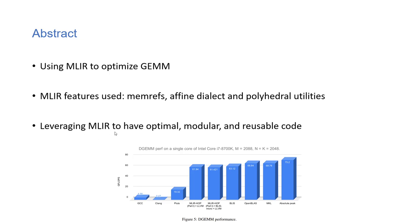The paper leverages MLIR to produce optimal, modular, and reusable code. Looking at the numbers, the MLIR high-level operator is very close to the hand-optimized OpenBLAS and MKL, and all of them are very close to the absolute peak of the machine. It was argued that using an internal BLIS kernel within the outer nested loops of MLIR gives no significant advantage over pure MLIR.